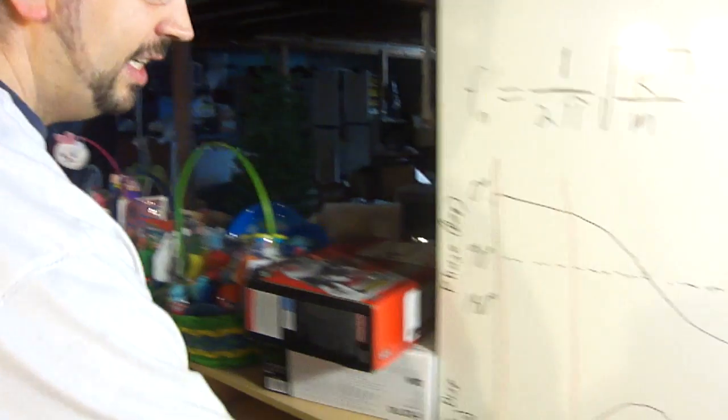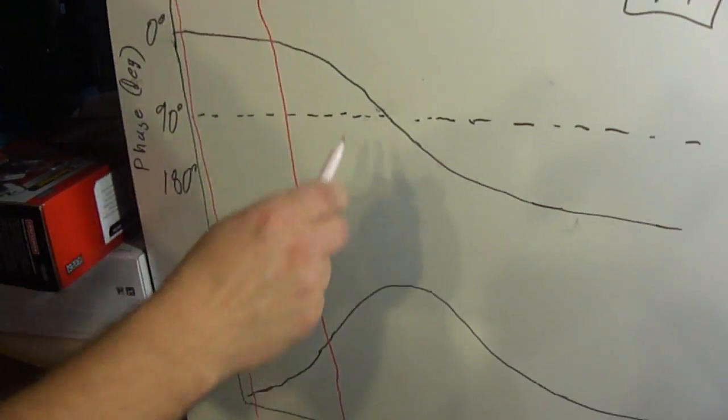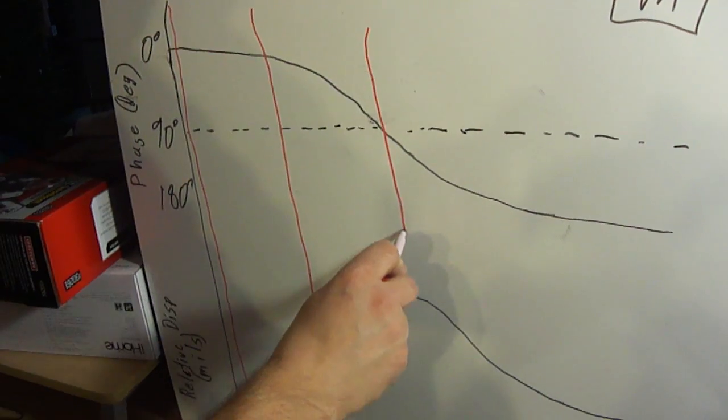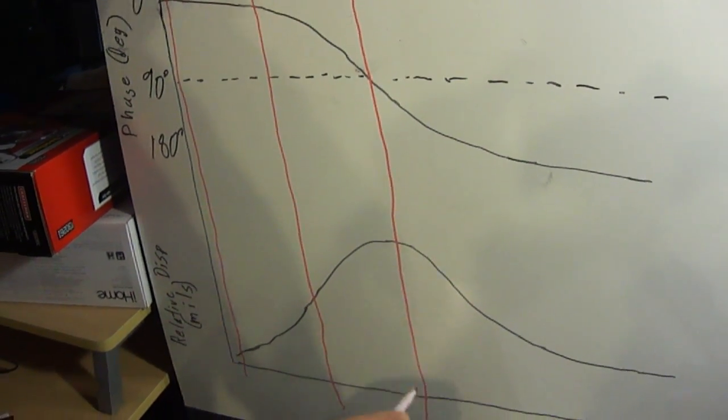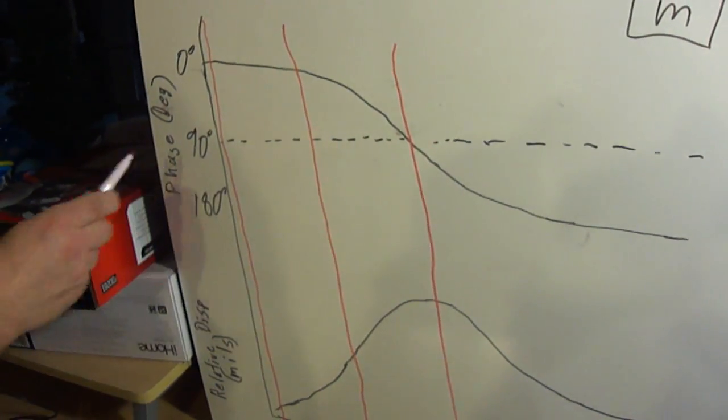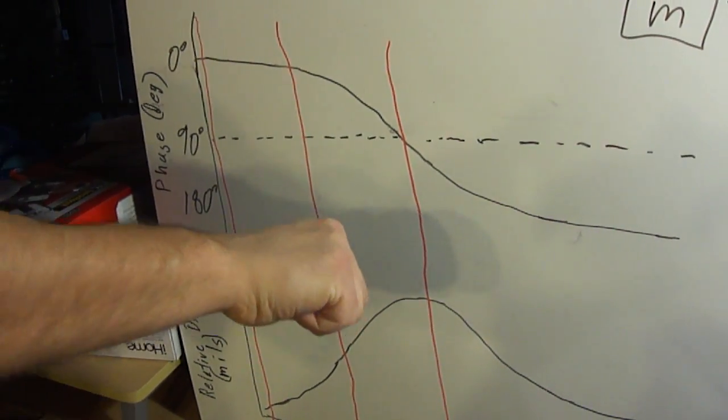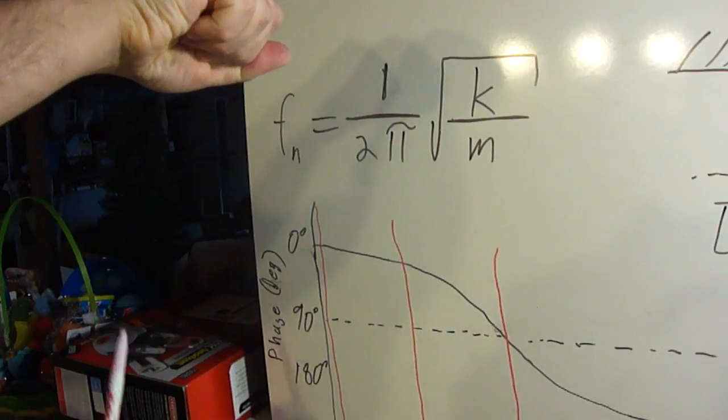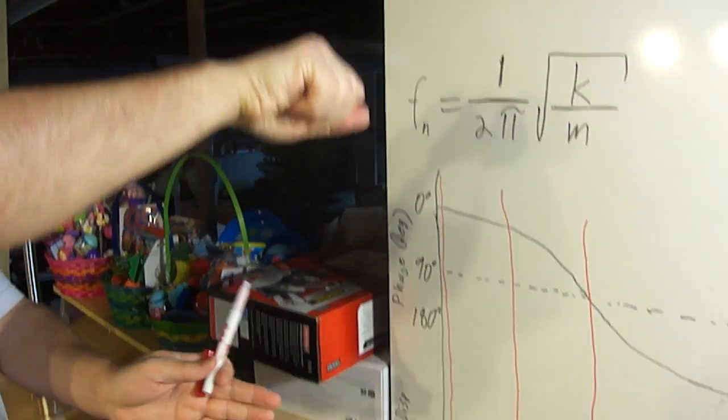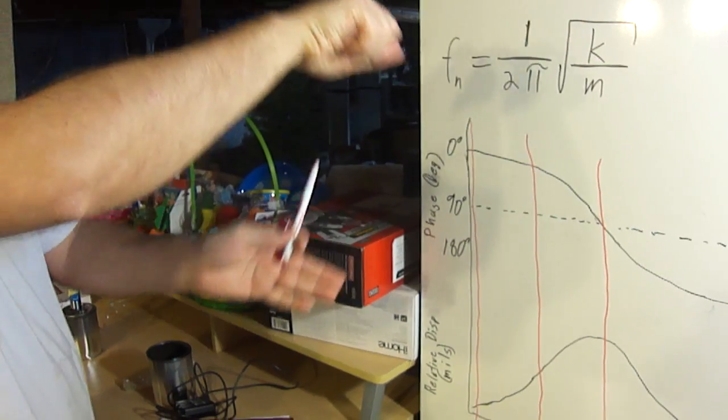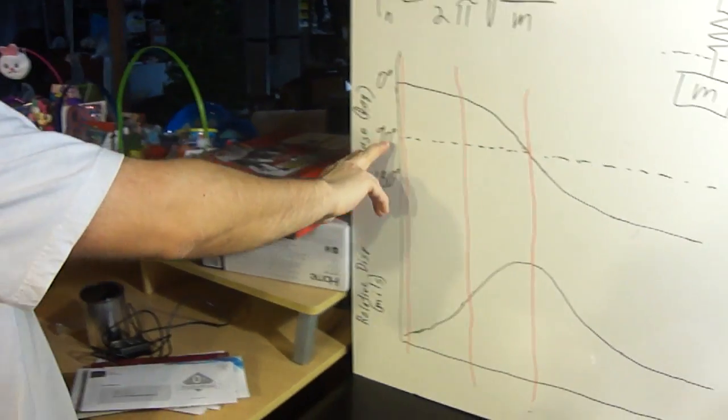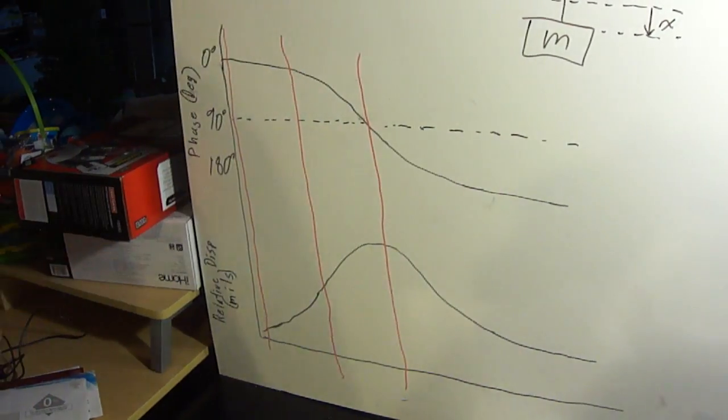And the next case, case three, is when the system is right at the natural frequency. Because the system will have a 90 degree phase shift, what you'll notice is that when my hand is at its maximum velocity, the weight will be still. Conversely, when my hand is still, the weight will be at its maximum velocity. That's what we mean by 90 degree phase shift in the system.